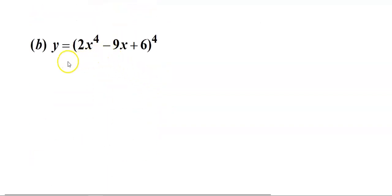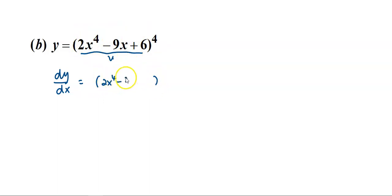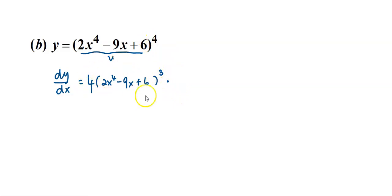Look at the next example. We take the inside expression as u and the outer function is u to the power of 4. So dy/dx equals the derivative of the outer function — keep the inside function the same. Differentiating u to the power of 4, you move the 4 to the front and the power becomes 4 minus 1, which is 3. Then you differentiate the inside function u with respect to x. Differentiating 2x to the power of 4 gives 8x cubed.